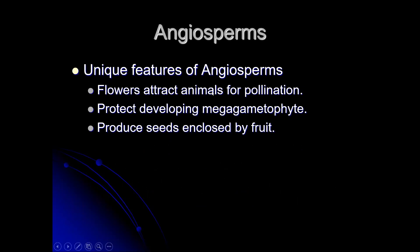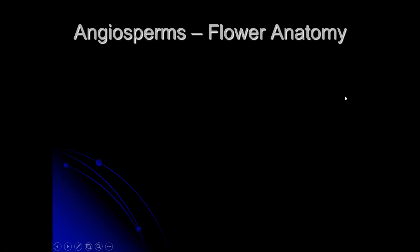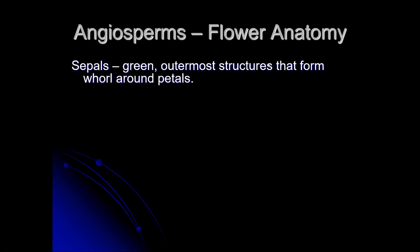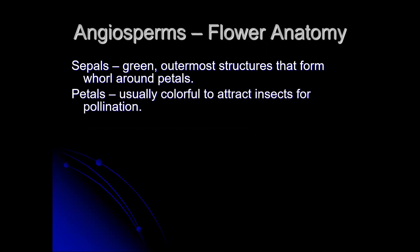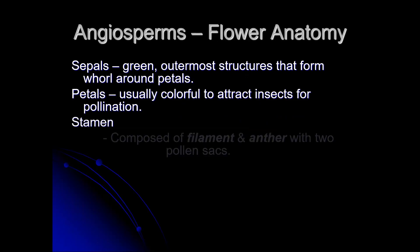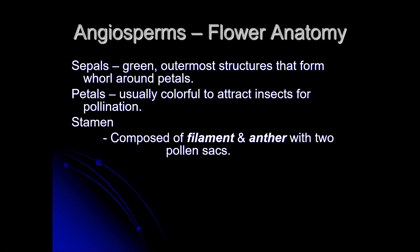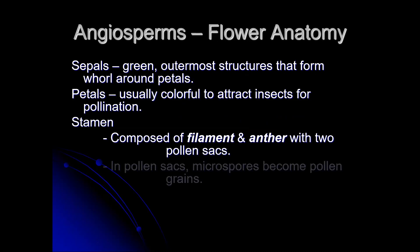Unique features of angiosperms: the flowers attract animals for pollination — that's why they're there, that's why they're usually bright and showy and beautiful. They protect the developing megagametophyte and produce seeds enclosed by a fruit. Flower anatomy: sepals are the green outermost structures that form all around the petals. Petals are colorful and attract insects. The stamen is the male part, composed of filament and anther, and that's where the pollen grains are going to develop.